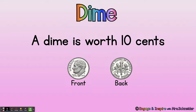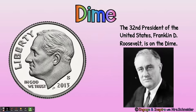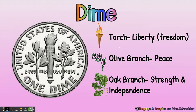A dime is worth ten cents. Here's the front of a dime and here's the back of the dime. The 32nd President of the United States, Franklin D. Roosevelt, is on the dime. On the back of the dime you see a torch, which is a symbol of liberty or freedom; an olive branch, which is a symbol of peace; and the oak branch with a little acorn, which is a symbol of strength and independence.